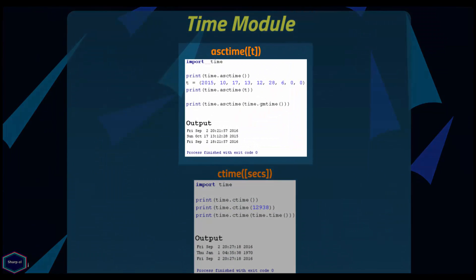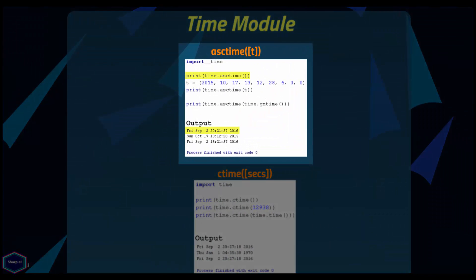When you call asctime() without any argument, it returns a 24-character string object expressing local time, as shown in this example. If an argument is given, it must be of type time tuple, and asctime() converts it into a readable 24-character string object. It can also take a gmtime() function call as an argument, since gmtime() returns a time tuple object.